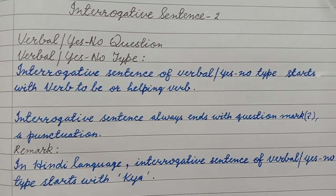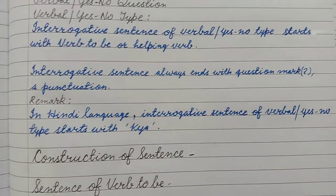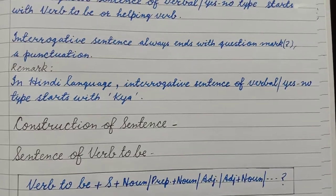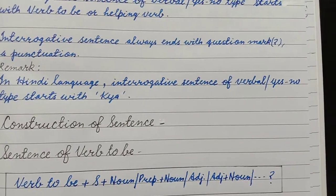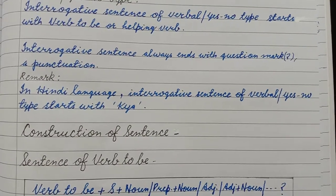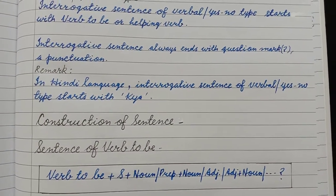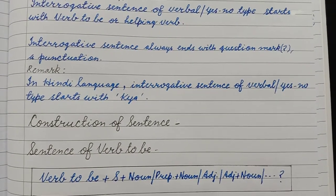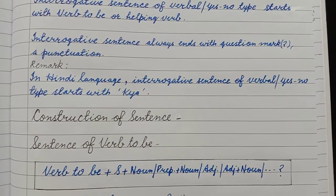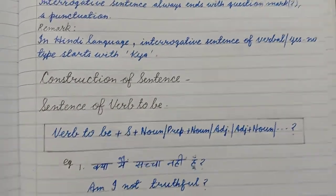You can see here, interrogative sentence of verbal or yes-no type starts with verb to be or helping verb. Interrogative sentence always ends with a question mark — a punctuation. In Hindi language, interrogative sentence of verbal or yes-no type starts with 'kya'. When we translate it into English, we don't write 'kya'; instead, if it's a verb to be sentence we start with verb to be, and if it's verb to have or verb of action, we start with the helping verb.